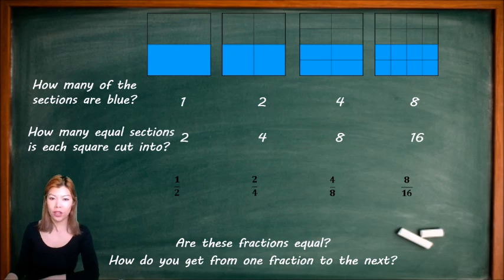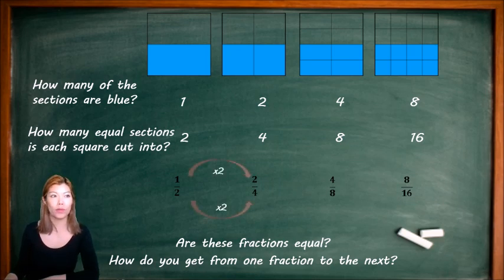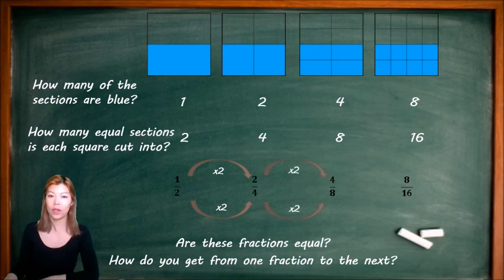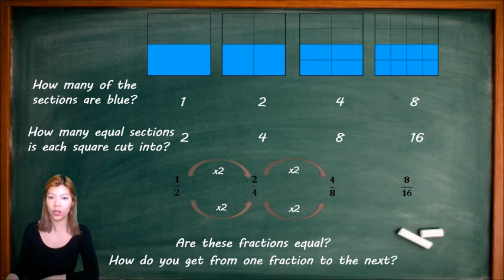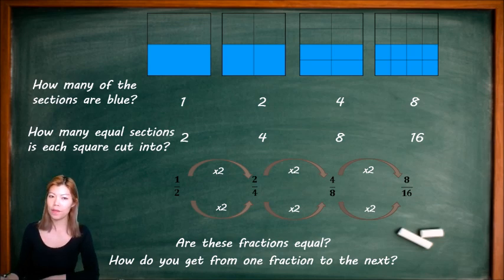How do you get from one fraction to the next? Let's have a look at our fractions and see if we can find how we did that. From a half to two over four, we multiply the denominator and the numerator by two. From two over four to four over eight, we did the same thing — two times two is four, and four times two is eight. And from four over eight to eight over 16, we again multiply the top and bottom by two. So to get an equivalent fraction, we have to multiply the top and bottom numbers by the same number.